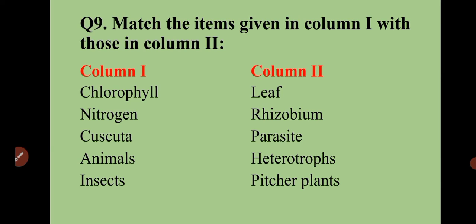Question number nine: match the items given in column one with column two. Chlorophyll is found in leaves. Nitrogen is a nutrient. Parasite plants depend on a host. Animals are heterotrophs because they depend on others for their food. Pitcher plant feeds on insects.